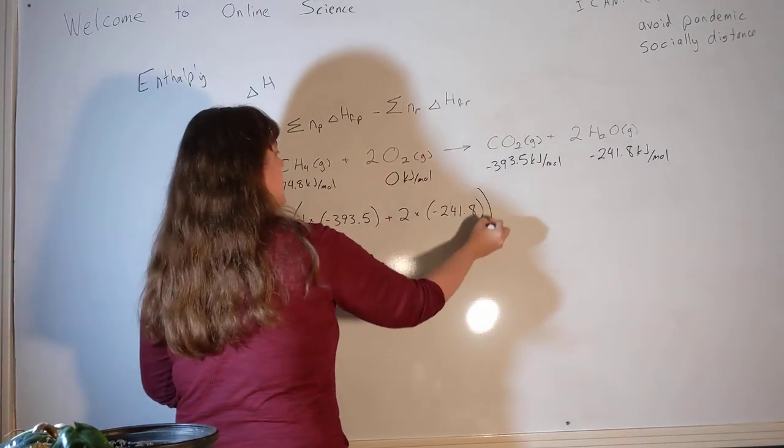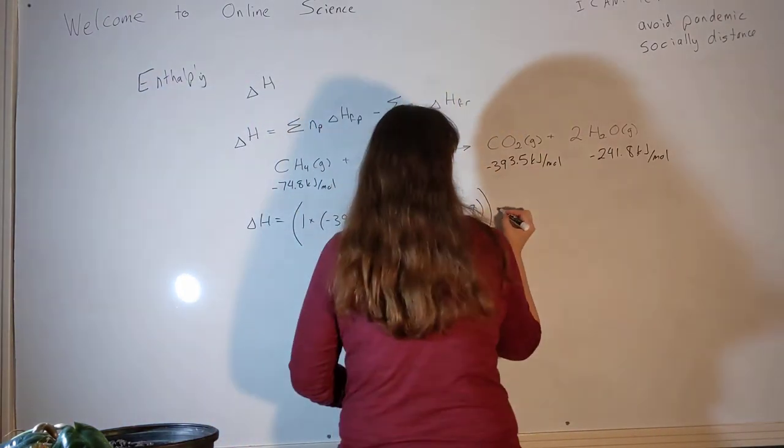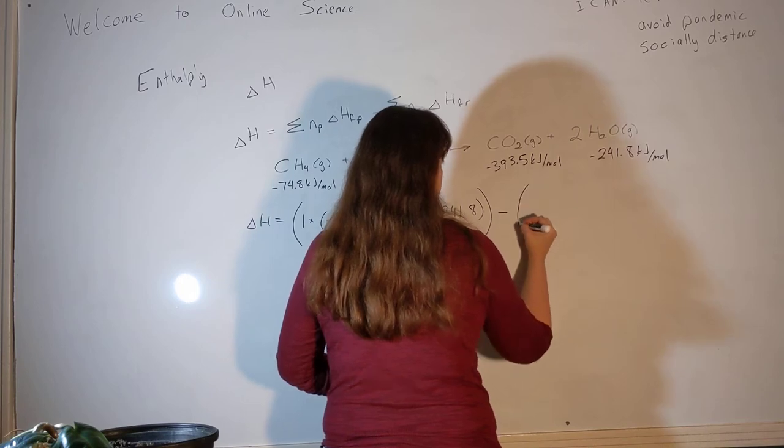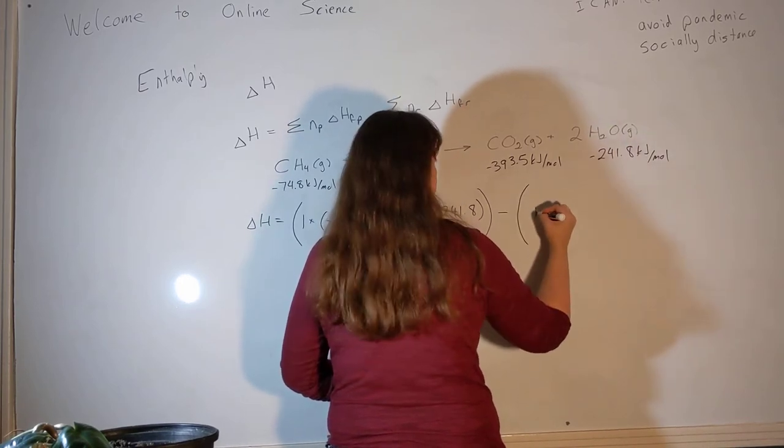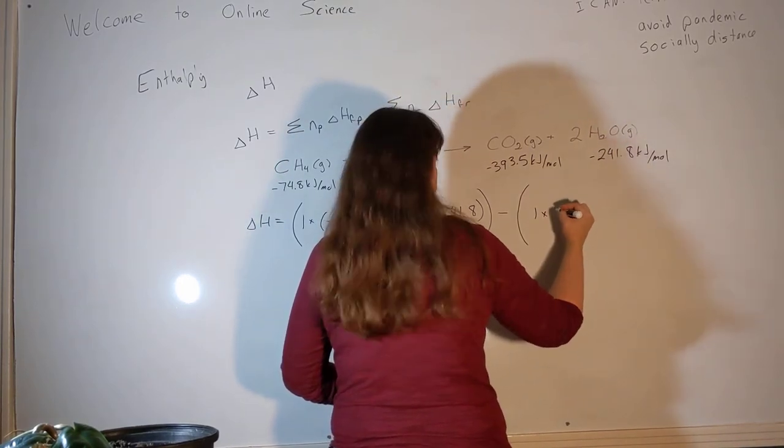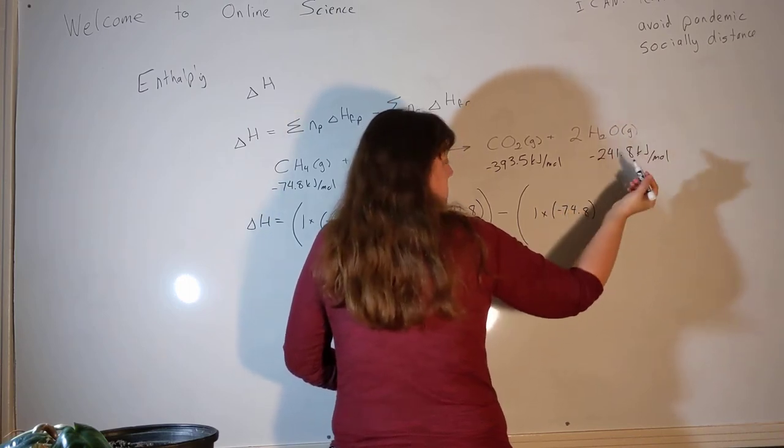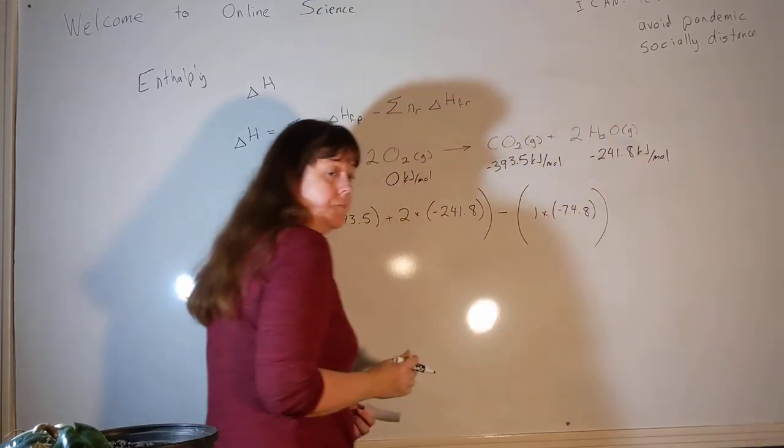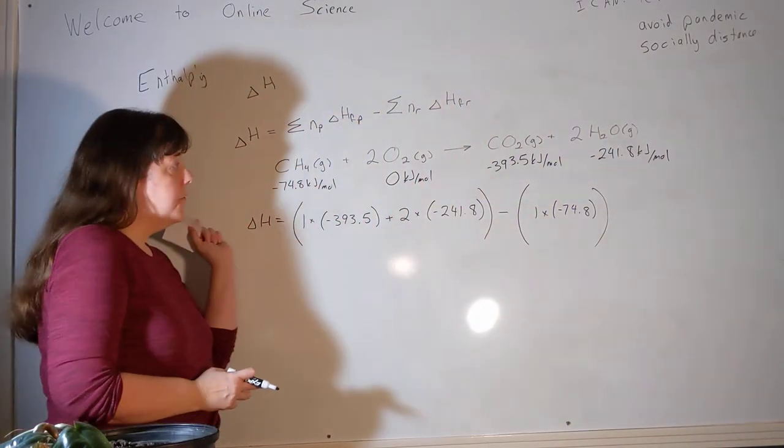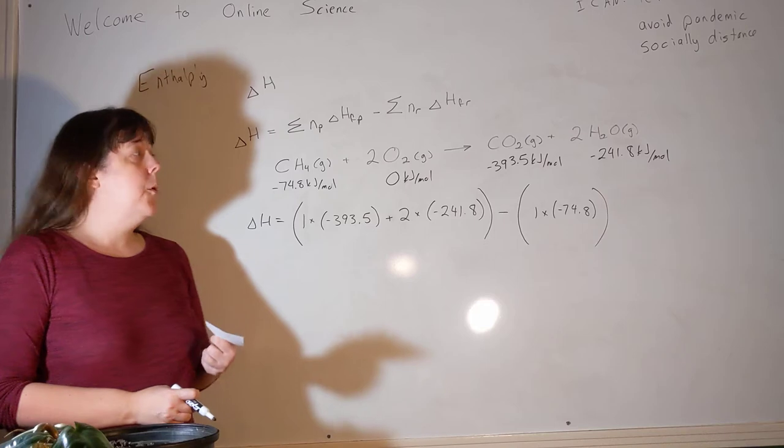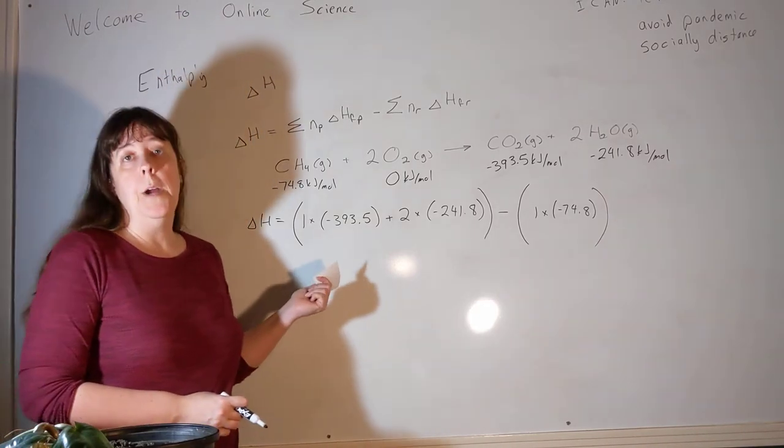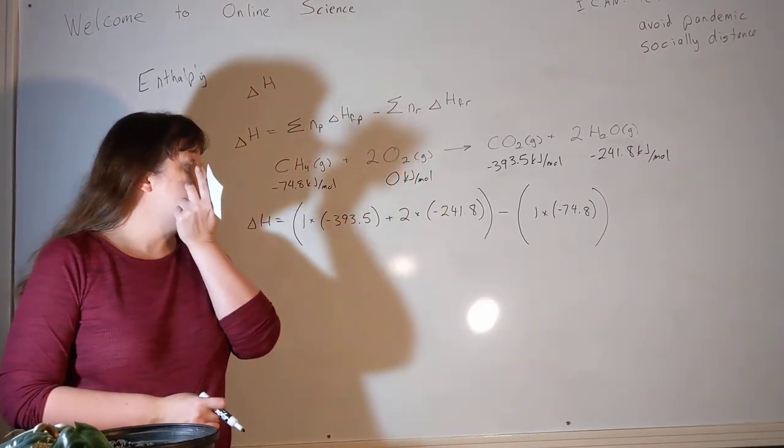So those are the products. And sometimes we put big brackets around the products because from that we're going to subtract the reactants. One times the heat of formation of methane, which is negative 74.8. And then plus zero. So that's all there is to it. So this is really simple arithmetic. Most of the time, this isn't even an algebra problem. This is just following along and doing the arithmetic.